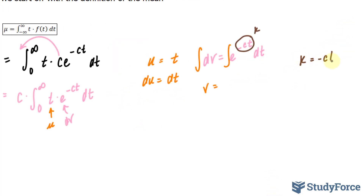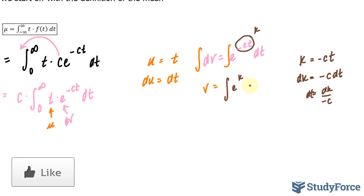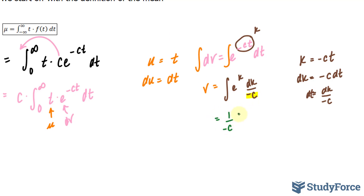We set k equal to negative c t, and taking the derivative implicitly with respect to t gives dk equal to negative c dt. Therefore dt equals dk over negative c. Substituting, we have the integral of e to the power of k, dk over negative c. Pulling out the negative c gives 1 over negative c times the integral of e to the power of k dk. The integral of e to the k is itself, so v equals 1 over negative c times e to the power of negative c t.